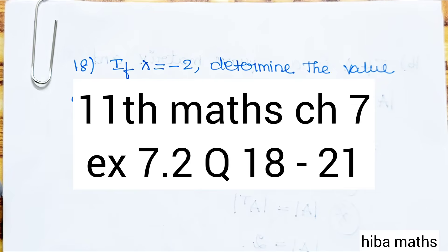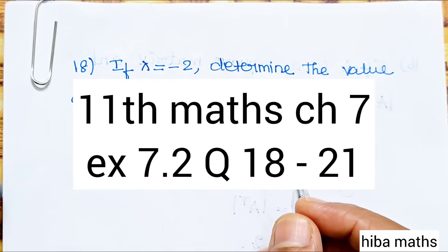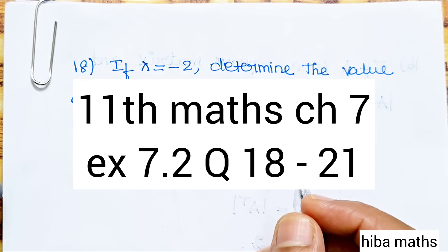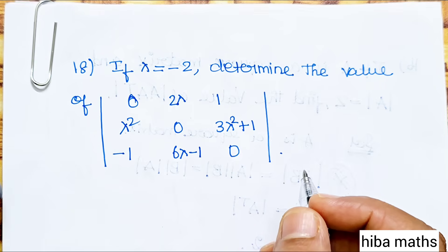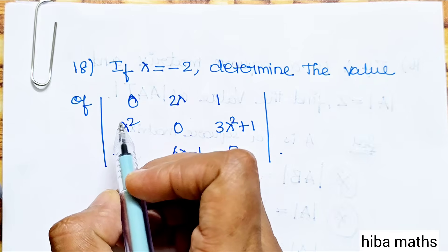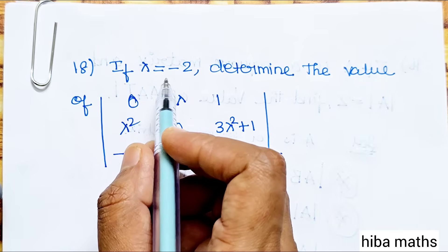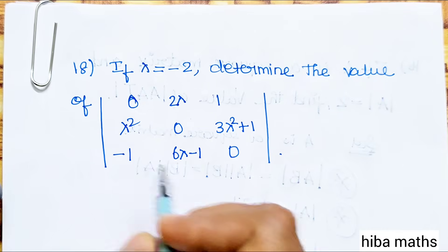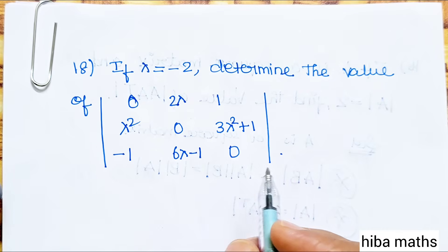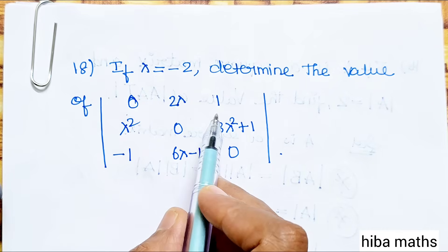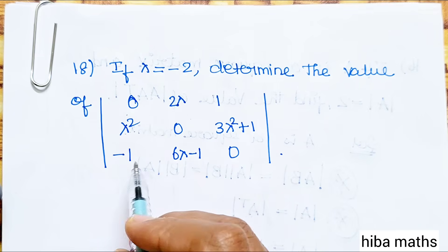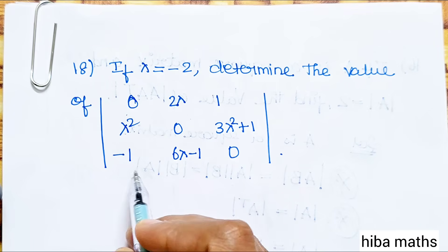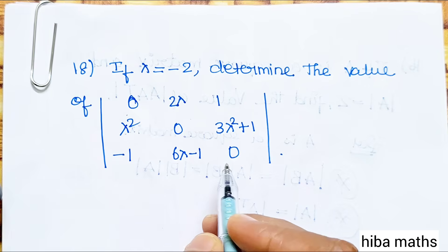Hello students, welcome. This is Class 11 Maths, Chapter 7: Matrices and Determinants, Exercise 7.2, Question 18. The question asks: if lambda is equal to minus 2, determine the value of the determinant with entries 0, 2λ, 1, λ², 0, 3λ²+1, −1, 6λ−1, 0.